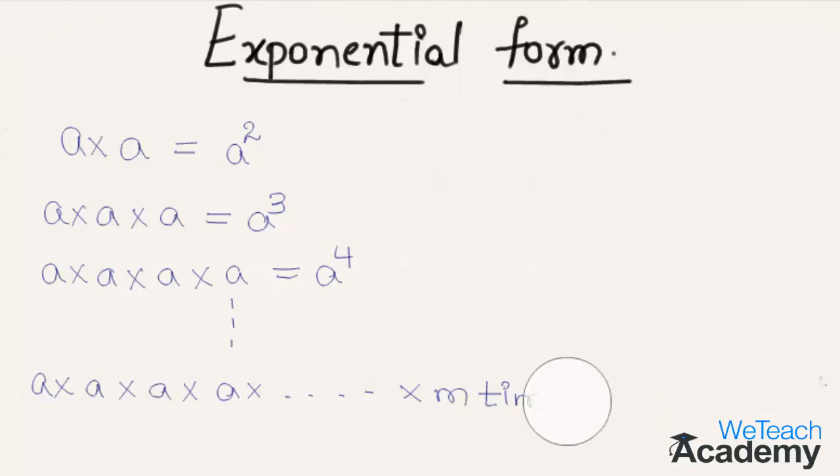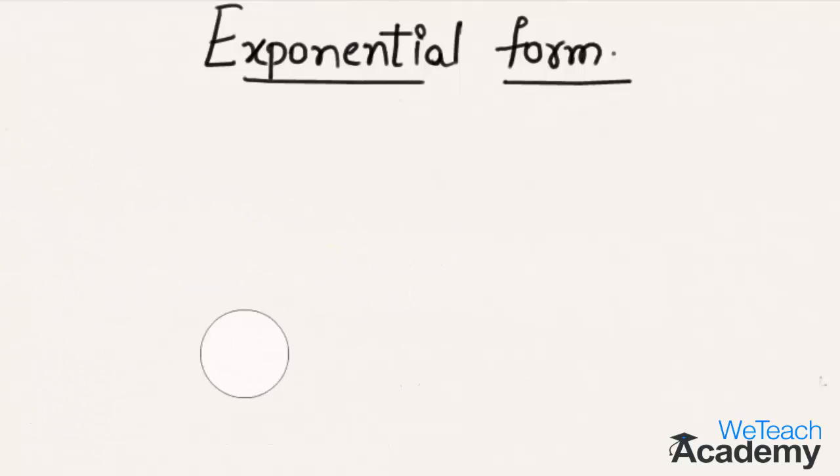Let us consider an example and try to simplify in exponential form. The example is 81, which is nothing but 3 multiplied itself for four times. We can write this as 3 raised to the power 4, where 4 is the exponent and 3 is called the base.